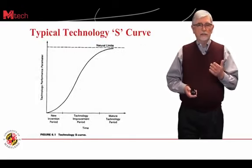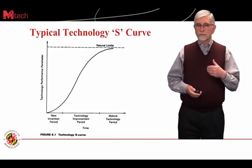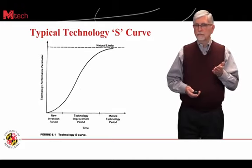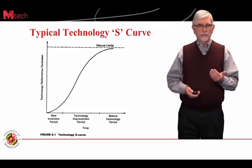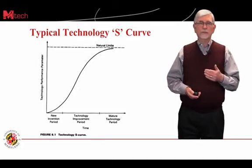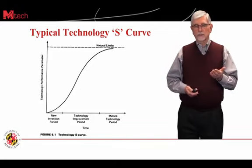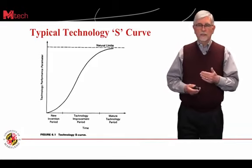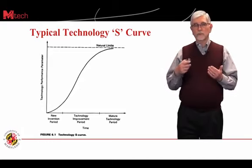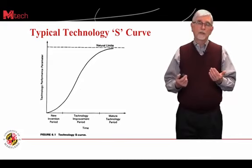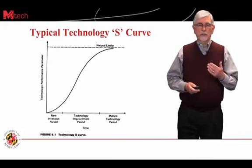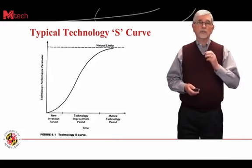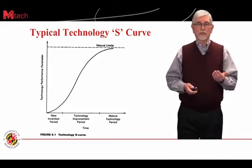Let's take a look at a typical technology S-Curve. This doesn't represent every technology, but gives you an idea of how to understand one. The horizontal axis represents periods of time and the vertical axis represents how highly the technology is performing. As technology is first introduced, it's not performing very highly, but it goes through a period of growth and improvement until it reaches what we call its natural limits of performance. That can take a long or short period of time, depending upon how much effort is put into developing that technology.